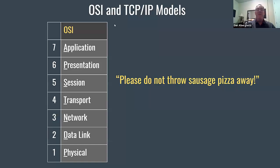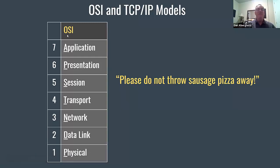The OSI and TCP/IP models. The seven layers of the OSI model are: application, presentation, session, transport, network, data link, and physical. This is the hierarchical structure of the Open Systems Interconnection model.